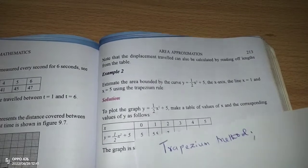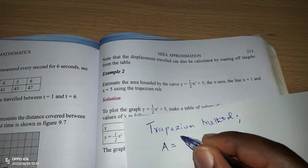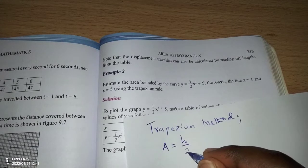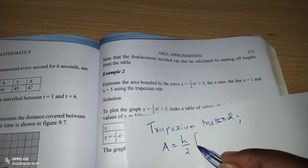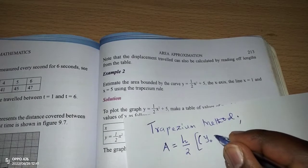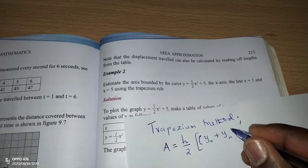So in this method, area is approximated using a formula which says h over 2. Then we open curl brackets, and smaller brackets where we have y naught and yn.